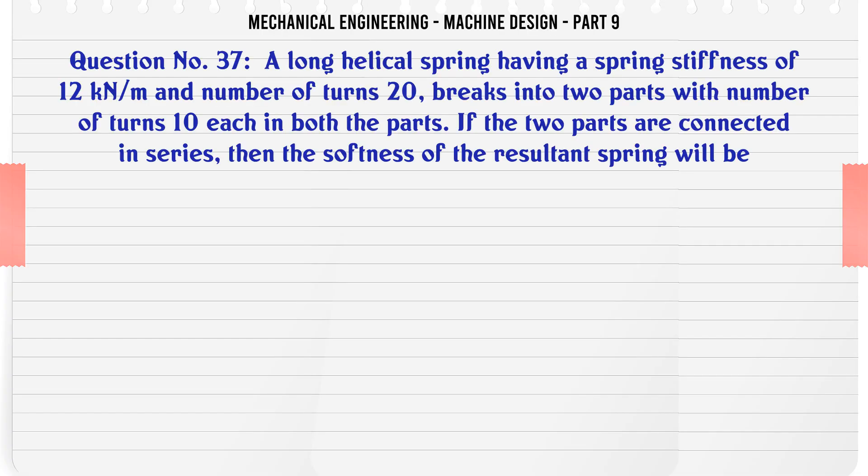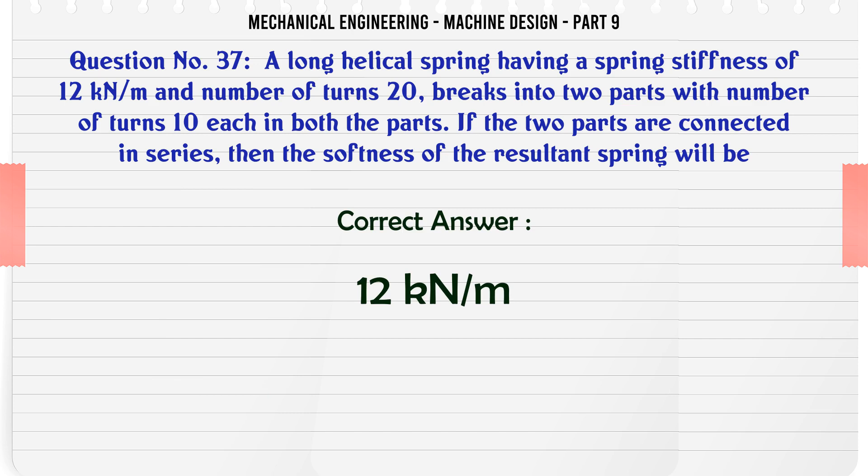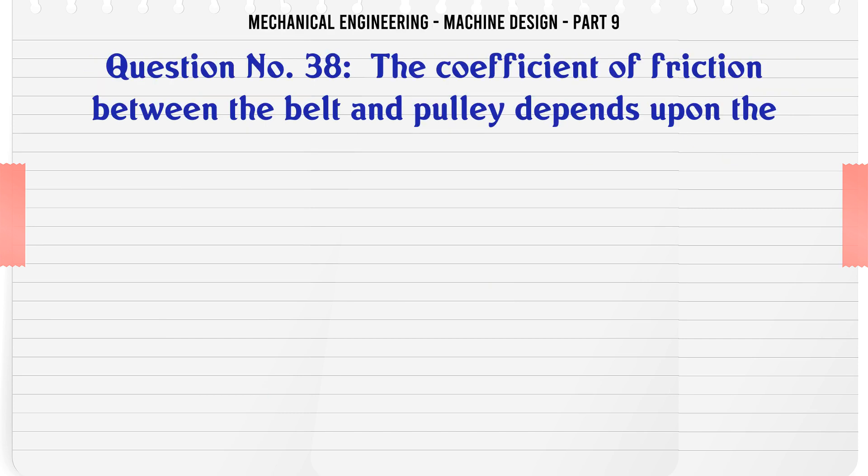A long helical spring having a spring stiffness of 12 kN/m and number of turns 20 breaks into two parts with number of turns 10 each in both the parts. If the two parts are connected in series, then the stiffness of the resultant spring will be: A. 6 kN/m, B. 12 kN/m, C. 24 kN/m, D. 30 kN/m. The correct answer is 12 kN/m.